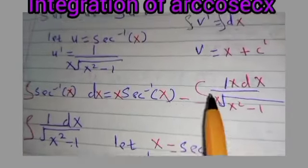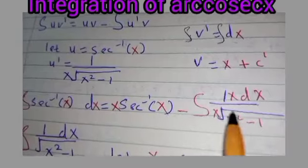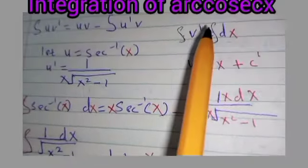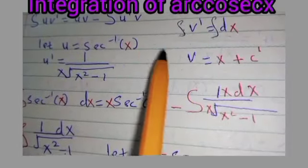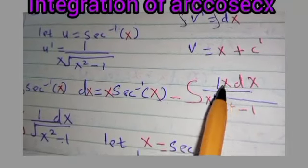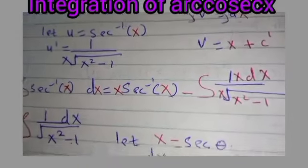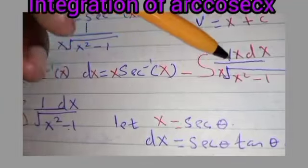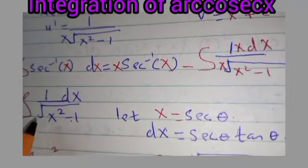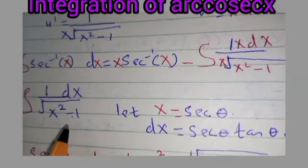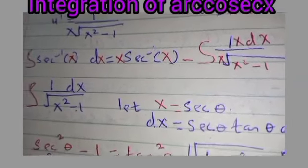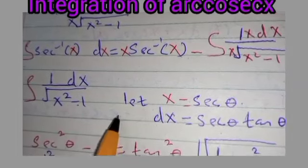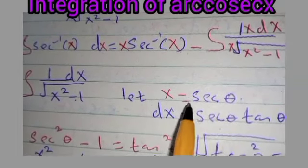Minus our u', which is 1 over x·√(x²−1), multiplied by our v, which is x, times dx. When we substitute, the x in the numerator and denominator cancel, leaving us with the integral of 1 over √(x²−1) dx. To integrate this part we use integration by the substitution x = sec θ.